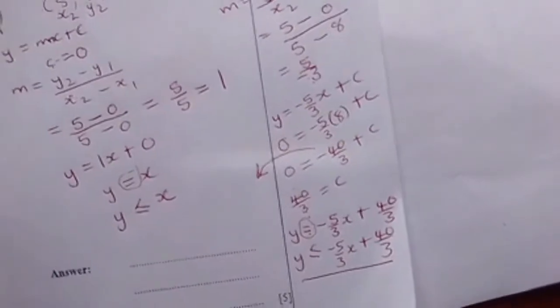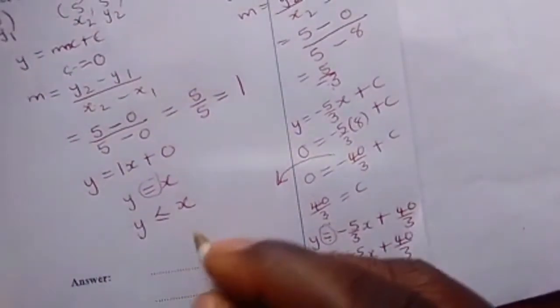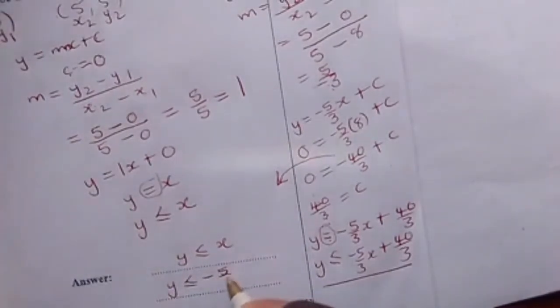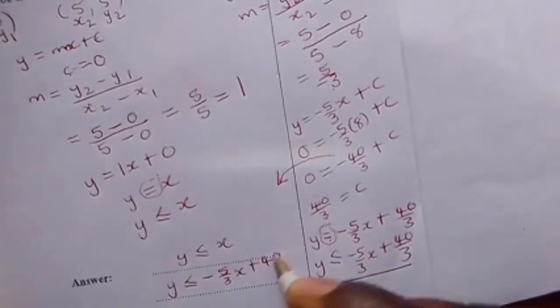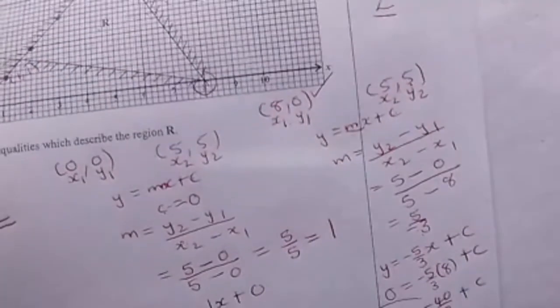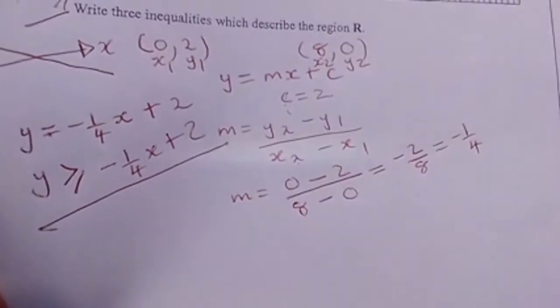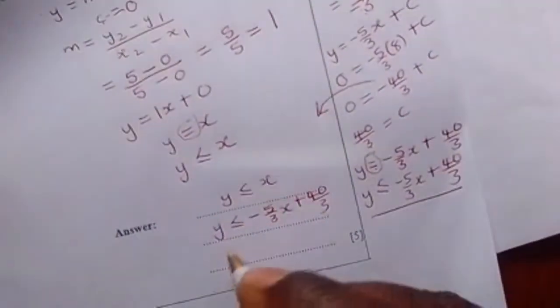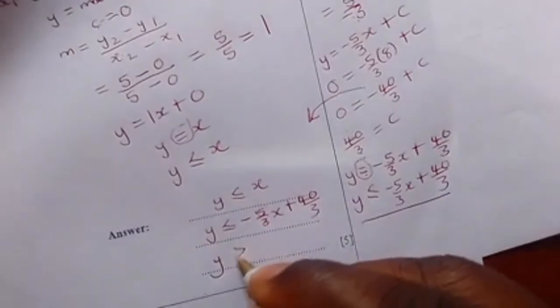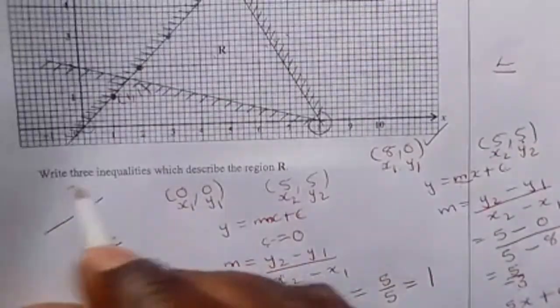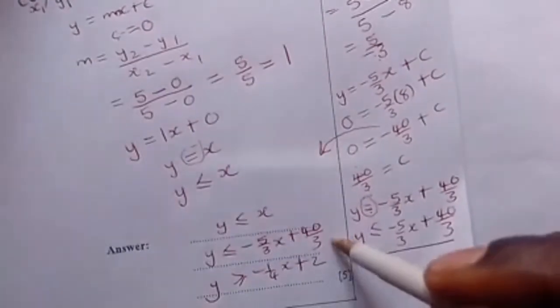We are now presenting our answers. y is less than or equal to x is the first answer. y is less than or equal to minus 5 over 3x plus 40 over 3 is the second one. From our first working, we produced y is greater than or equal to minus one quarter x plus 2. These are the required three inequalities, and you will be given five marks for that.